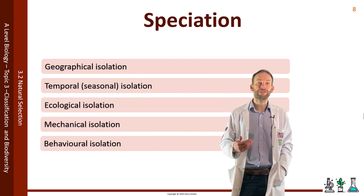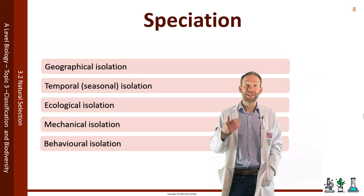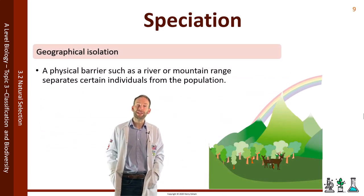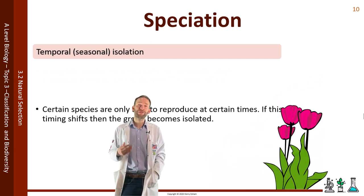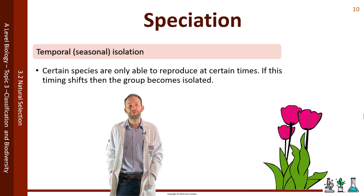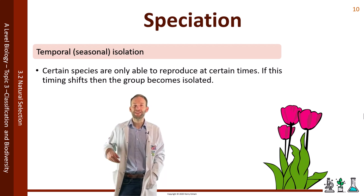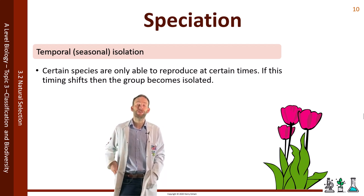Geographical isolation is when a physical barrier such as a river or mountain range separates certain individuals from the population. Temporal or seasonal isolation is when certain species are only able to reproduce at certain times and if this timing shifts, the group becomes isolated — for example, this might be the time of year that a plant flowers.